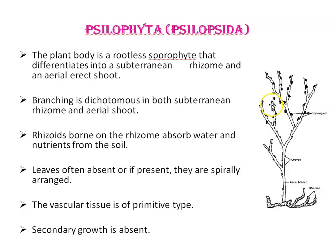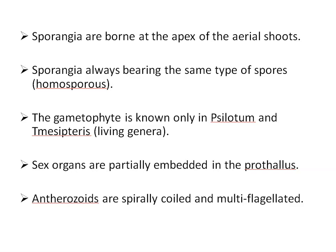You can see dichotomous branching in the aerial shoot system and also in the rhizome. Rhizoids are borne on the rhizome and their function is to absorb water and nutrients from the soil. Leaves are often absent in Division Psilophyta, or if present, they are spirally arranged and scale-like — for example, in Psilotum, leaves are scale-like — or leaf-like appendages in the case of Tmesipteris. Vascular tissue is of primitive type: very simple cylindrical protostele with annular or spiral tracheids. Secondary growth is absent.